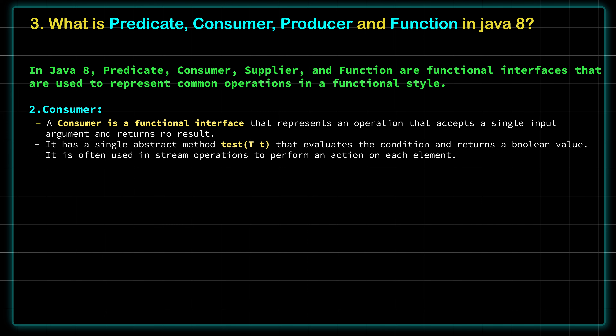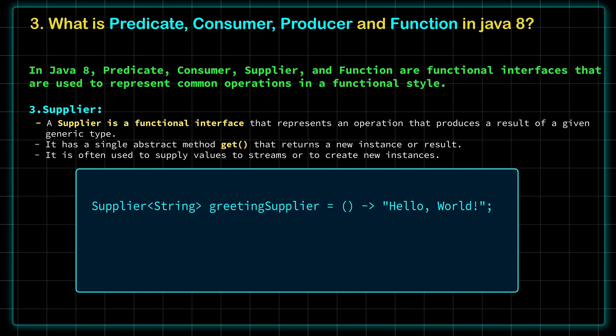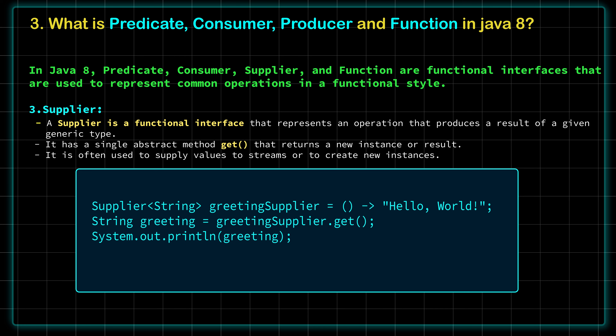Coming to the next one — Producer, which is also known as Supplier in Java 8. Supplier represents an operation that produces a result of a given generic type. It has a single abstract method called get() which returns a new instance or result. Supplier is often used to supply values to streams or to create new instances. In the example, we have given the input 'Hello World' to a Supplier of String type, and when we call the get() method on that Supplier, it gives us the same result we initially provided.